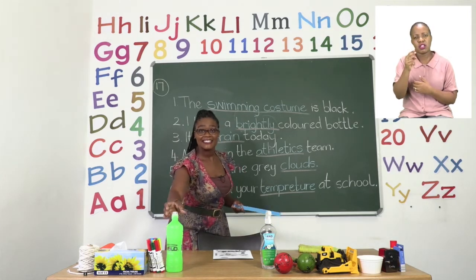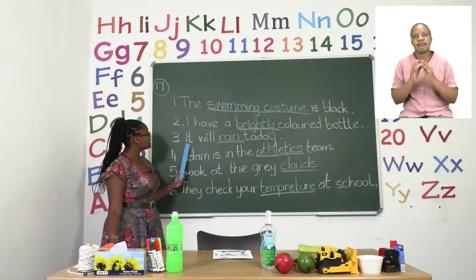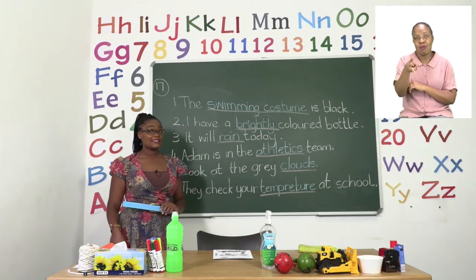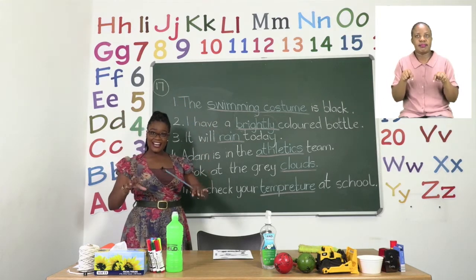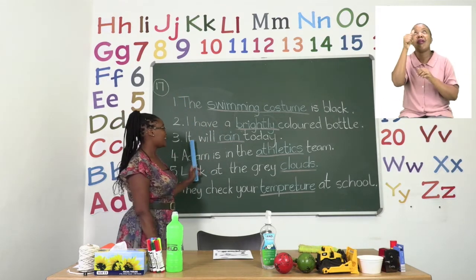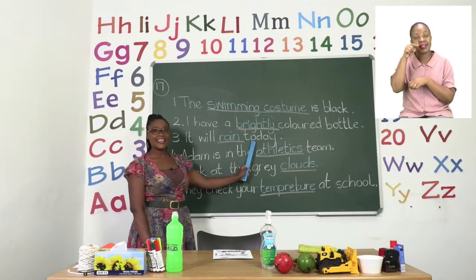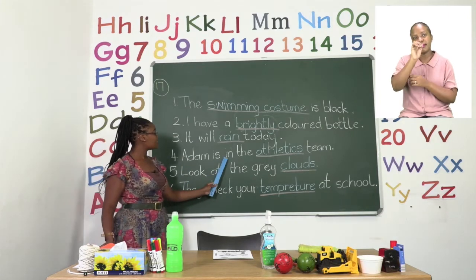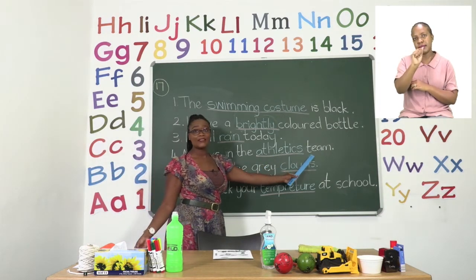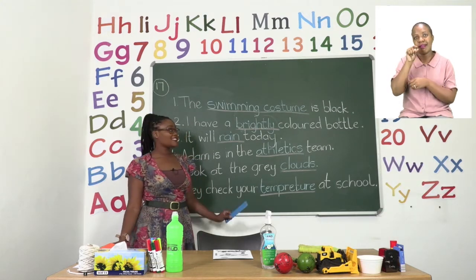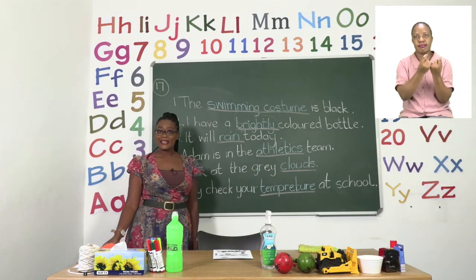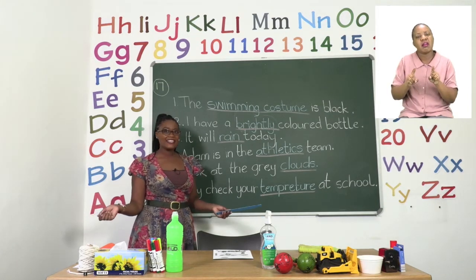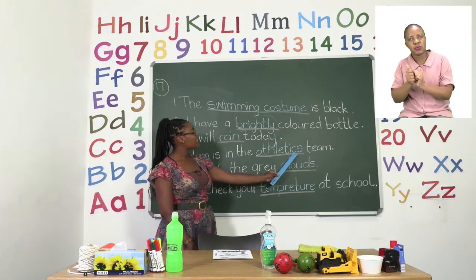Let's move on. The next sentence says: it will rain today. Remember what we said rain was — it's the droplets that fall from the sky. The next sentence says: Adam is in the athletics team. Remember, athletics is a sport that has many different events. Maybe Adam is a runner or a jumper, but he is in the athletics team.